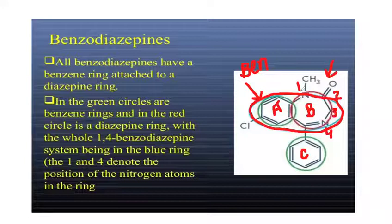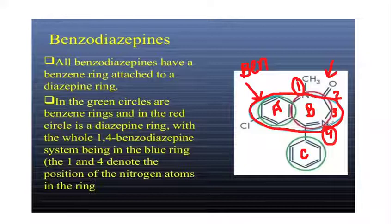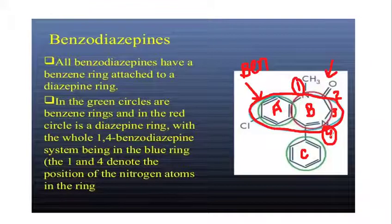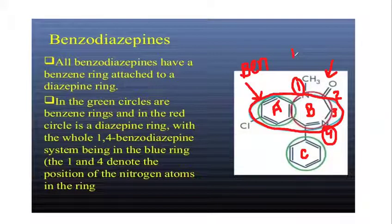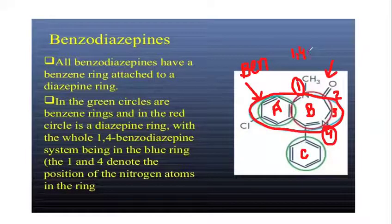Starting the numbering: position 1 is nitrogen, position 2 has the carbonyl functional group, position 3 is next, and position 4 has nitrogen. So at position 1 and position 4 we have nitrogen present. Therefore, Ring B is named 1,4-diazepine.